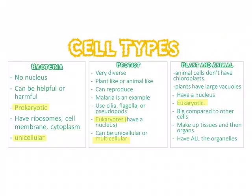Protists are eukaryotes, so they have a true nucleus that stores their DNA. They can be plant-like or animal-like. They're very diverse, and they use cilia, flagella, or pseudopods to move.